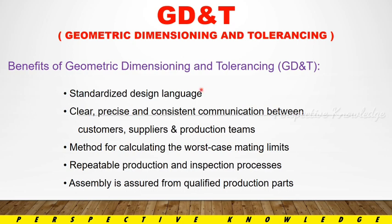If you understand the process, you can use it. GD&T is an engineering drawing standard. You can understand the basics of the process. If you have a component, you can do the process. You can do the dimensions, specific properties, and understand what we do in manufacturing. GD&T makes manufacturing easy to understand.